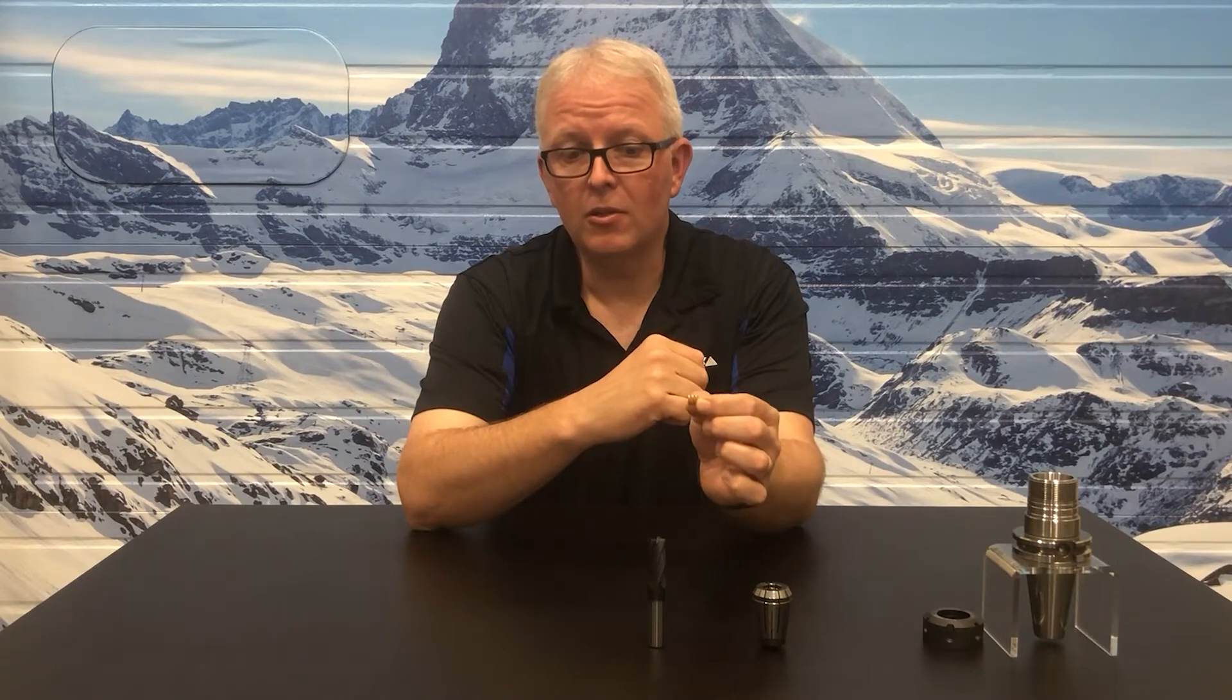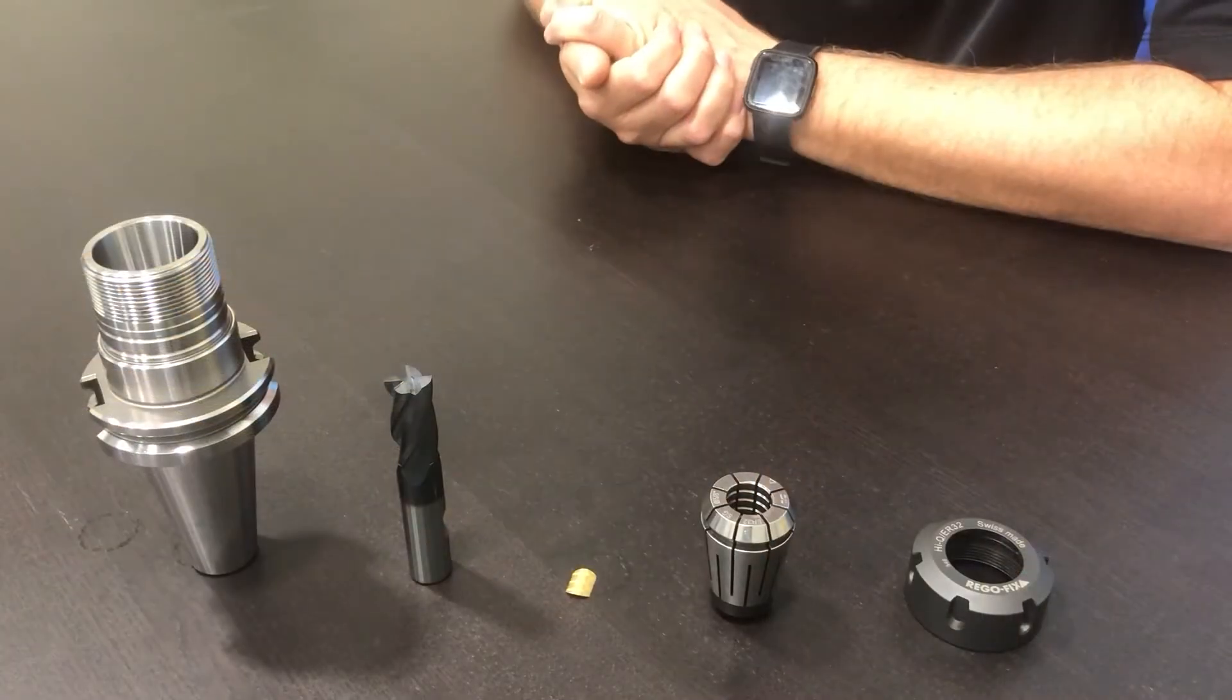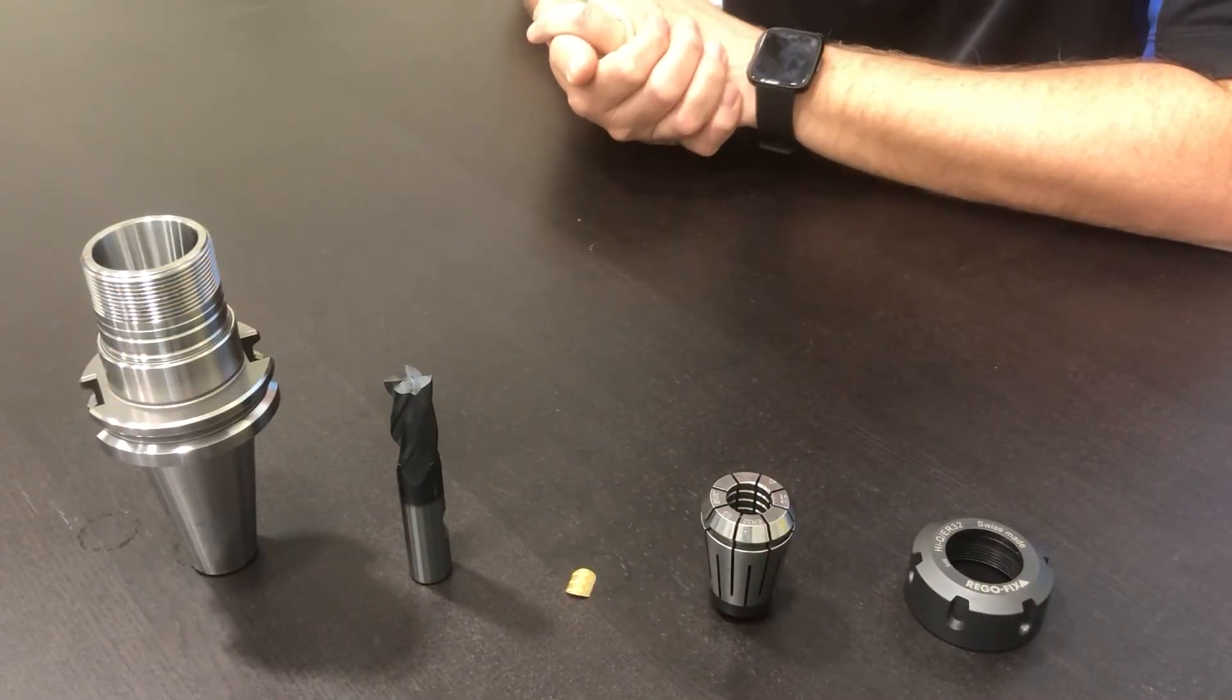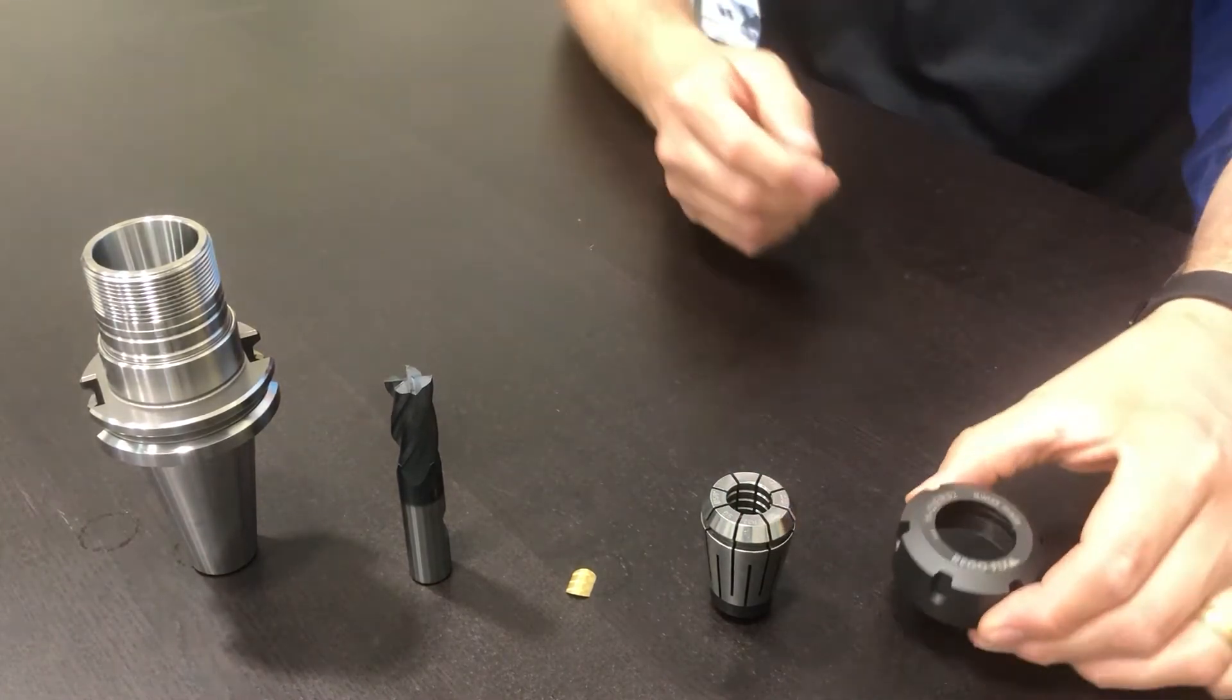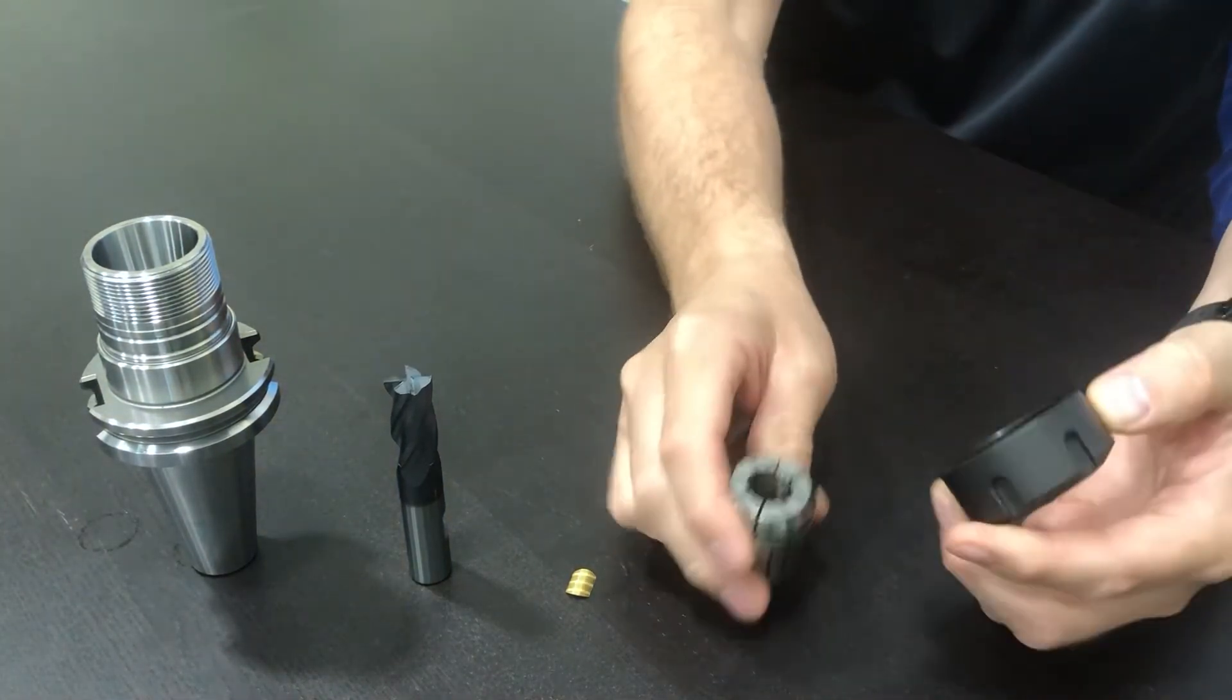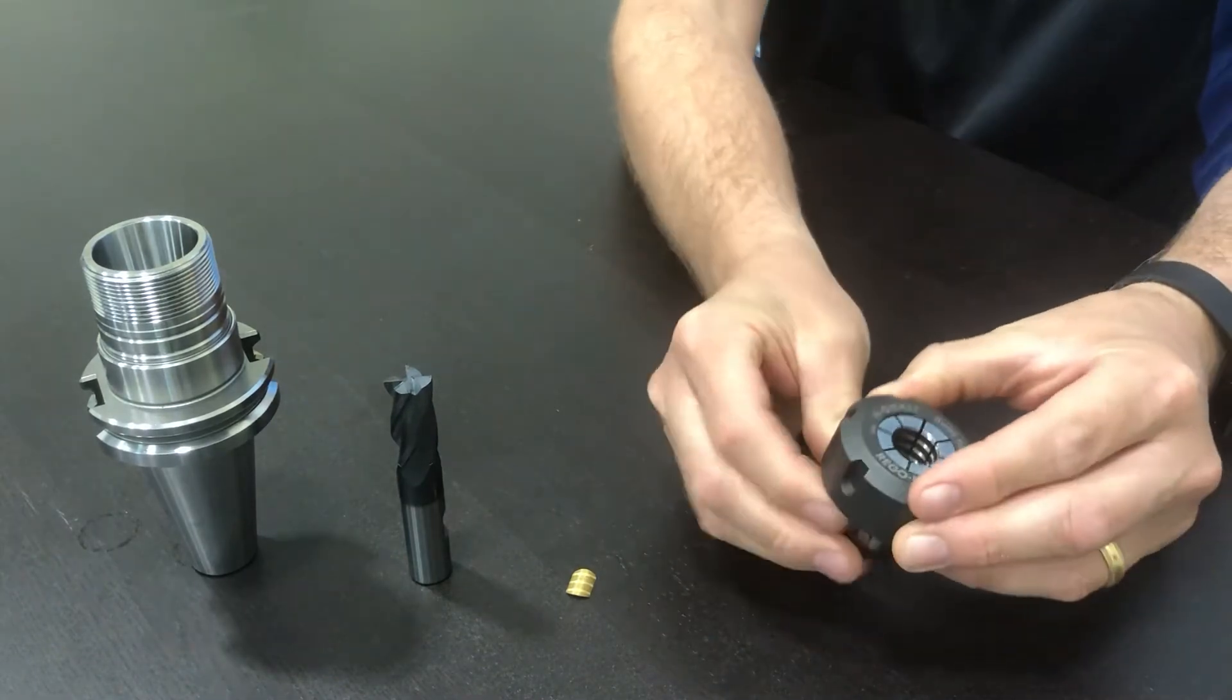Let's take a look at what the assembly looks like. What does it take to assemble an ER Secure Grip collet? Let's take a quick look. First, let's take my nut and snap the collet into the nut.